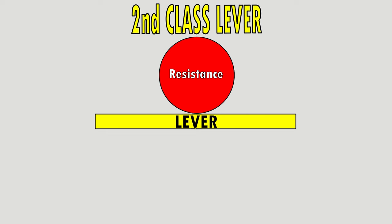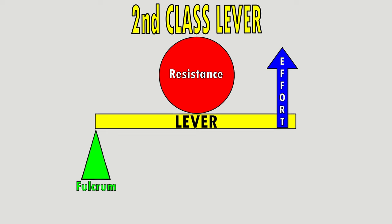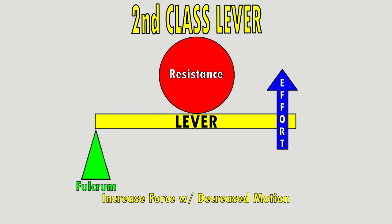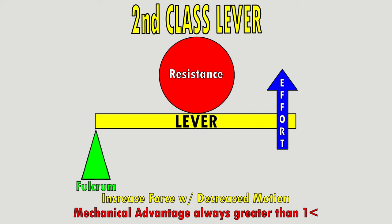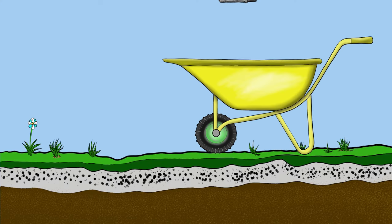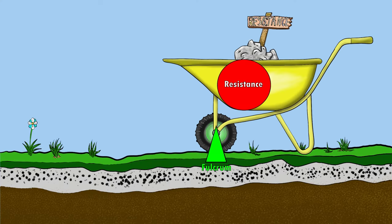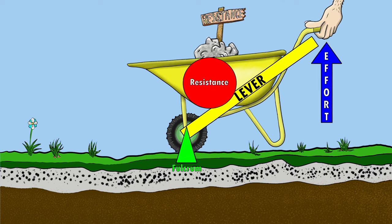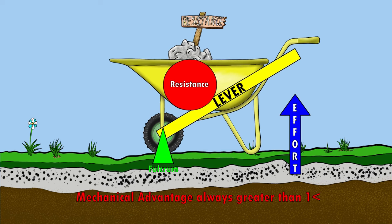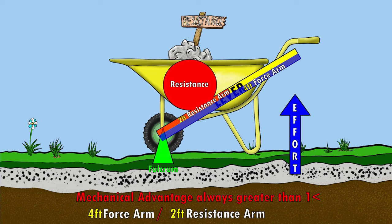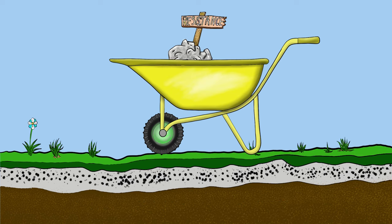Next is the second class lever, set up with the resistance in the middle between the effort force and the fulcrum. Its function is to increase force, with range of motion being sacrificed. The mechanical advantage is always greater than one. A common real-world example is the wheelbarrow: the wheel acts as the fulcrum, the load is the resistance in the middle, and the human provides the effort force.